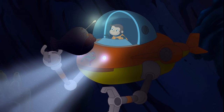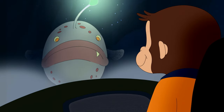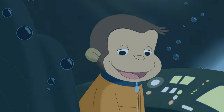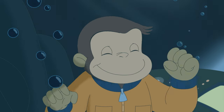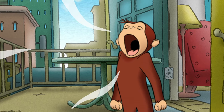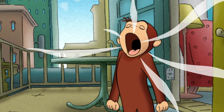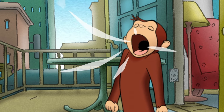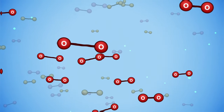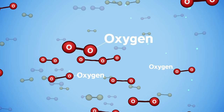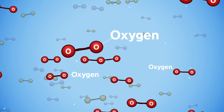To understand how fish breathe, first we have to understand how humans and monkeys breathe. The air around us is made up of particles called molecules that are so tiny they are invisible to our eyes. There are a bunch of different kinds of molecules in the air, but the one our body needs to breathe is called oxygen.